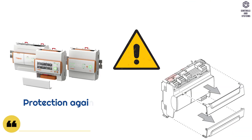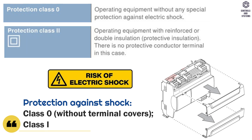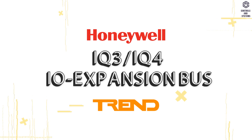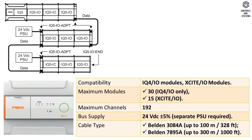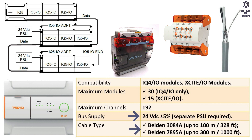Protection against shock: class zero is without terminal covers, class 2 is with terminal covers. IQ3 or IQ4 IO expansion bus: this table indicates the specifications of compatibility, maximum modules, maximum channels, bus supply, and cable type.